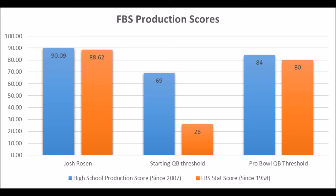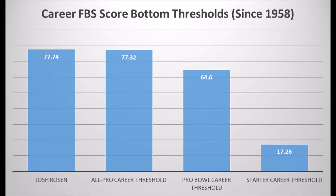When you get to his career data, the career FBS score essentially takes all of the performances of a quarterback — so if a quarterback plays three years, for example, you add up all those production scores and divide by three, which gives you this score. When it comes to Josh Rosen, his score was 77.74 out of 100, which pretty much hits all the thresholds when it comes to All-Pro Potential, Pro Bowl Potential, and Starter Potential at the position.